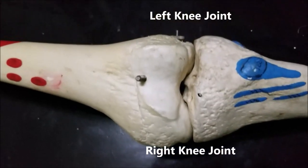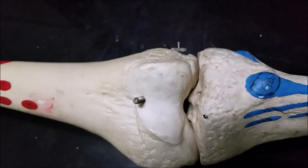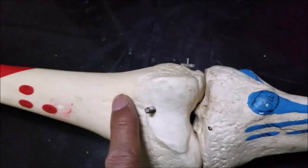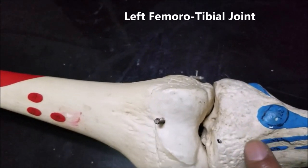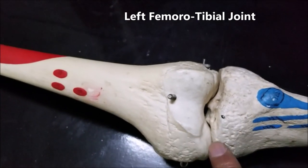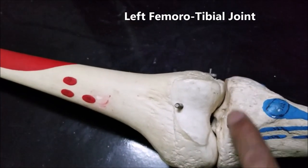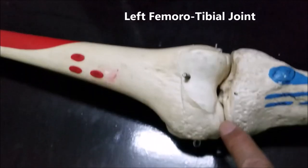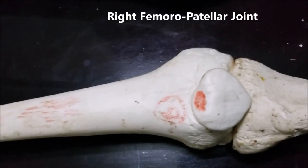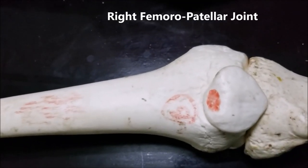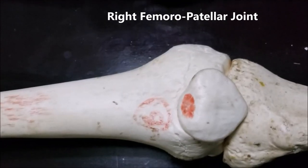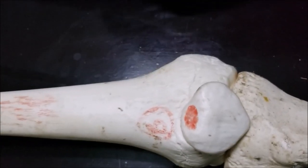First let's take a look at the bones which participate in the knee joint. The knee joint basically has got two components. One is the femoral articulation with the tibia — showing the left side — this is called the femoral tibial articulation. The other aspect is the articulation of the femur with the patella, which we can see on the right side. This is the femoral patellar articulation. So these are the two components of the articulation.